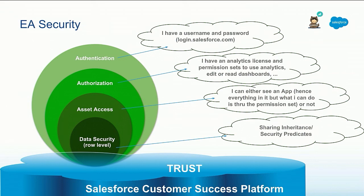Some folks might argue there is a fifth layer — column security, which is typically used in databases. In Salesforce, you can think of it as field-level access or field security. We don't have that natively in the dataset, but we can create multiple versions by slicing the fields and having different versions of the dataset.